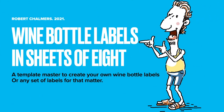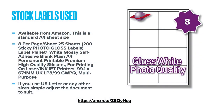This is a very brief look at creating wine bottle labels in sheets of eight. It's a template master to create your own wine bottle labels, but you can use it for any set of labels that come on those pre-gummed sheets that you can get from Amazon and other good suppliers of office stationery. The stock labels used are available from Amazon — this is a standard A4 sheet size with eight labels per page.